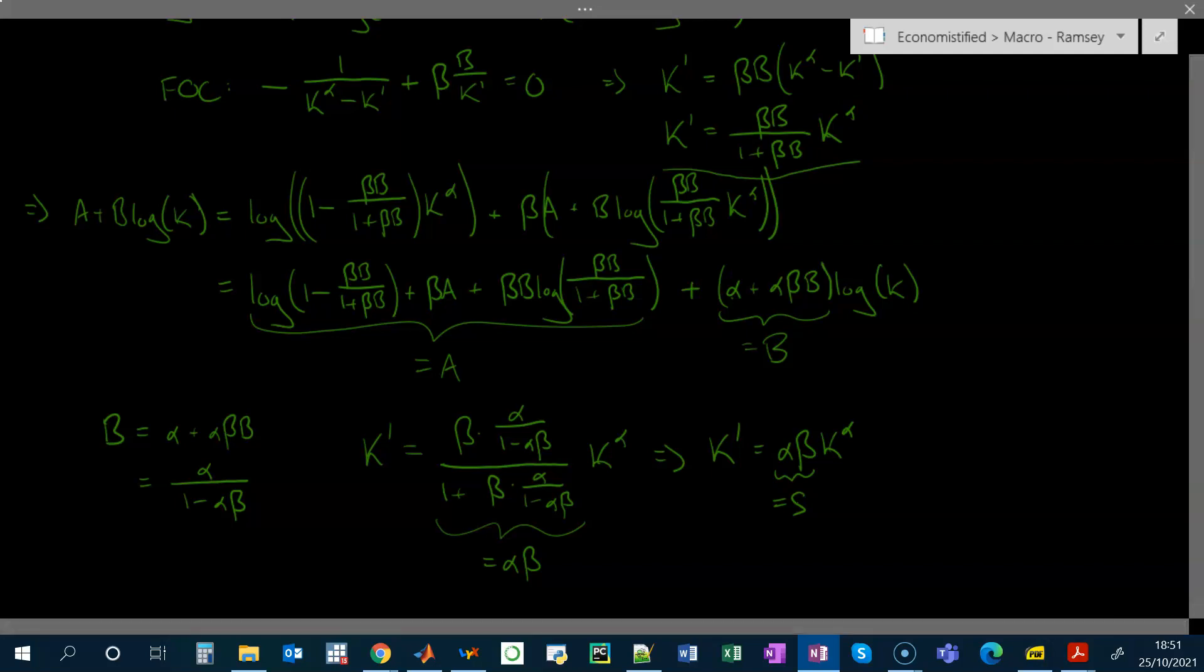It just so happens that with these specific assumptions that are made, the savings rate is constant. This is not generally true in the Ramsey model. In the steady state, it will usually be the case that the savings rate is constant, but outside of the steady state or in response to fluctuations, the savings rate will fluctuate as well.